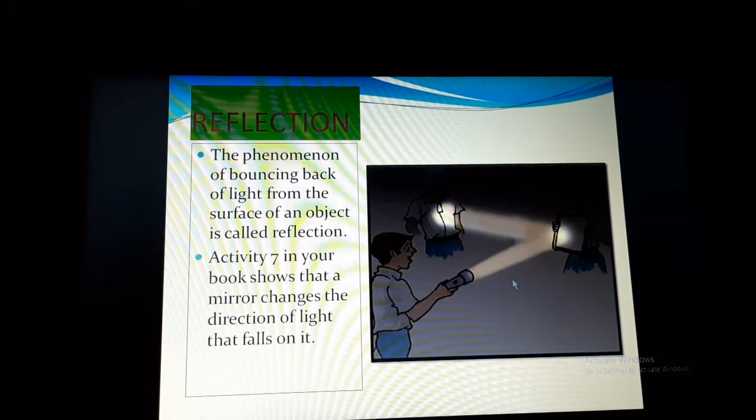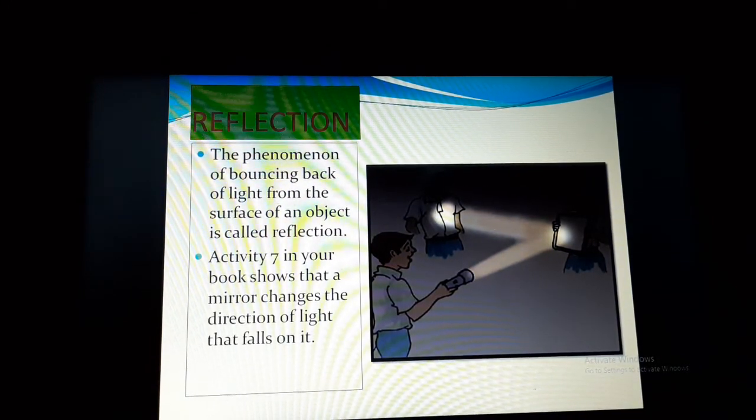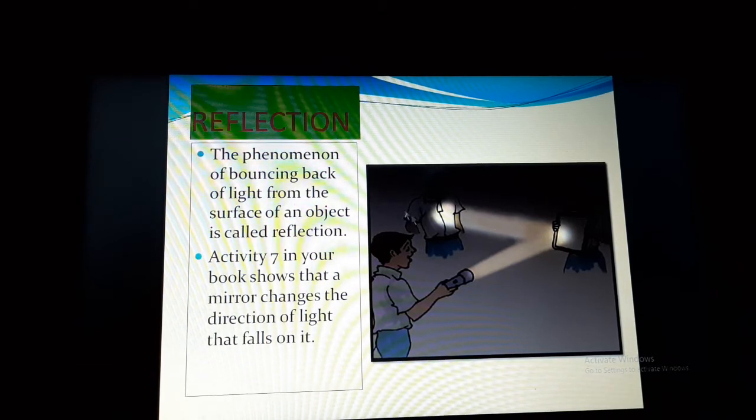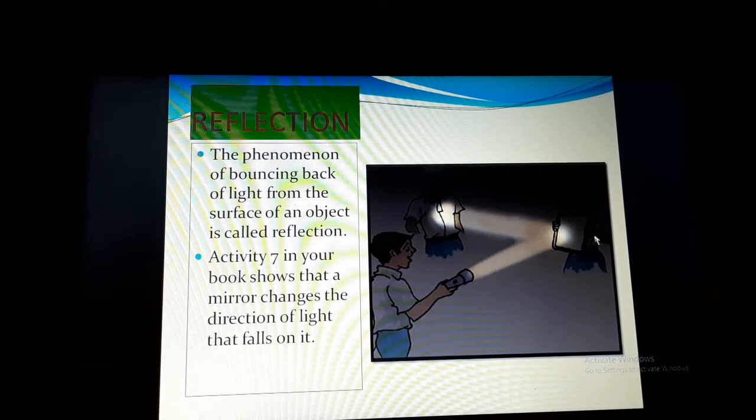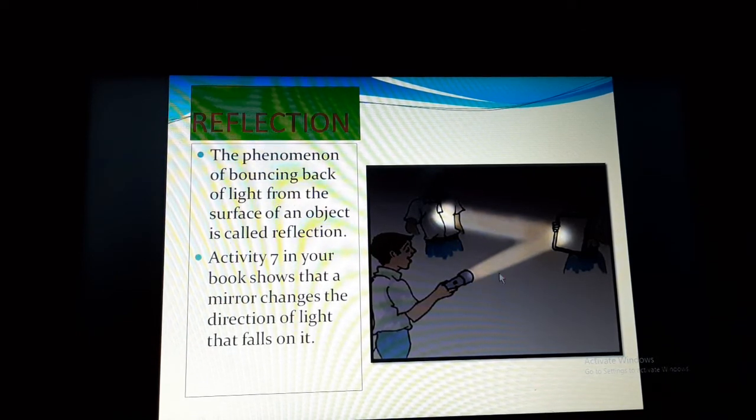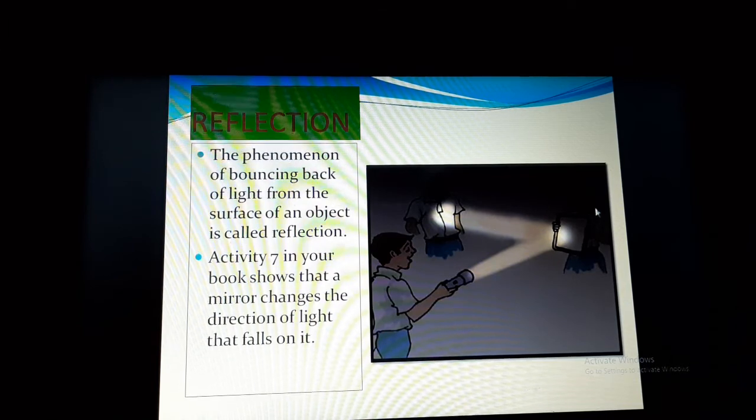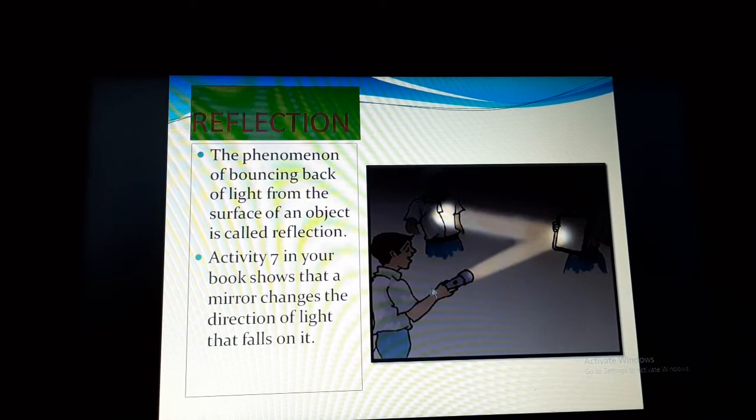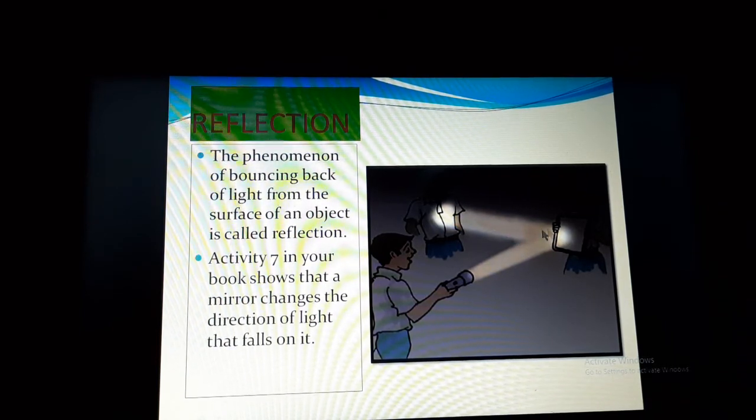If you can remember in the last video class, I discussed about this activity. Suppose three friends are here, one is focusing light and another one is holding the mirror. The light from the torch is falling on the mirror and the mirror is reflecting the light. It will either fall on the wall or if you can arrange another friend here, then the light will be reflected on that friend.